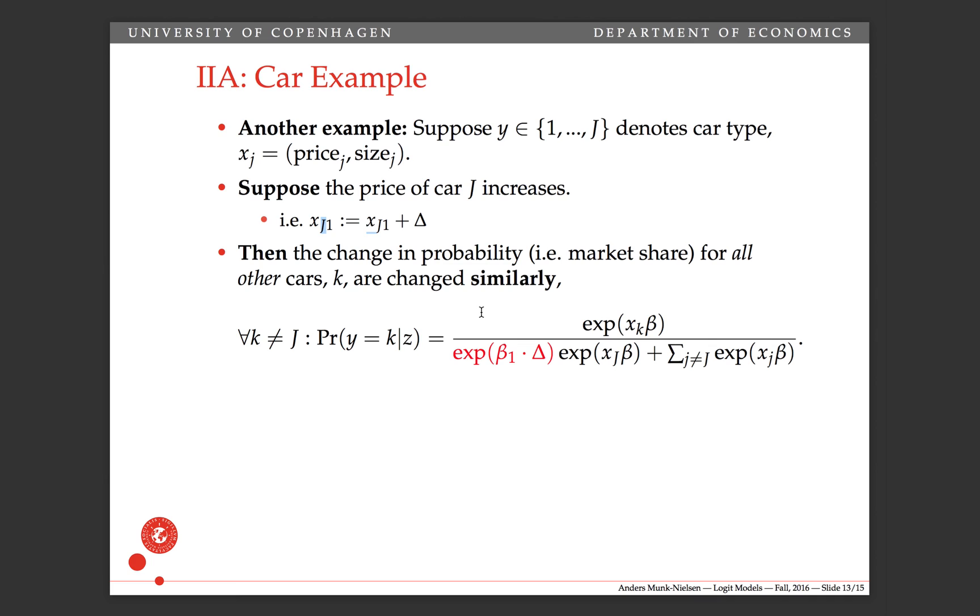So when we increase the price of one car, it steals in the same way from all of the other cars. It's not linearly in the same way because they have to sum to one and so on. It scales this thing here. So in some sense it's a non-linear function of all of this and it depends on this. But it's in a similar fashion for all of them. And this thing that it steals the market share for all of the other cars in a similar fashion is something that we don't like. If we change the price of Tesla, it's going to primarily be stealing from, I don't know, BMW, some luxury car. It's probably not going to be stealing market segment from some of the tiny little cars. But that's what this says.